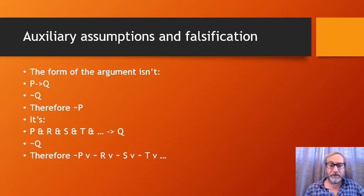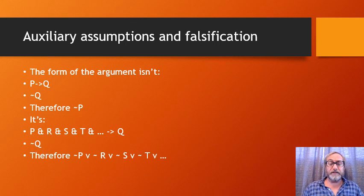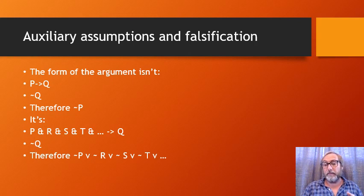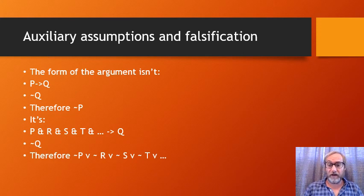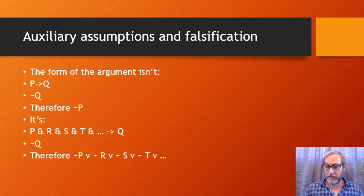When the experiment shows not-Q, you can still do modus tollens, but the conclusion is the negation of that whole long conjunction. By De Morgan's rule, a negated conjunction is equivalent to a disjunction: so what you've actually proven is 'either not-P, or not-R, or not-S, or not-T.' Maybe Neumann's theory was wrong, or maybe photographic paper doesn't do what you thought, or maybe light isn't a wave. That's the actual conclusion — not as helpful as Popper supposed.